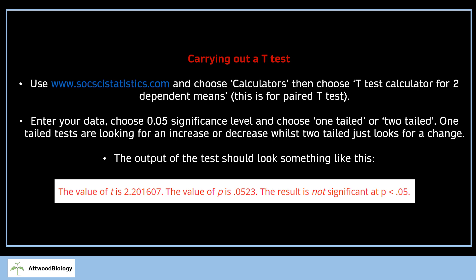We're always going to use the 0.05 significance level, and then choose one-tailed or two-tailed. The one-tailed test will look for an increase or decrease, while the two-tailed test will just look for a change. Think about your data and which one is going to be most useful.